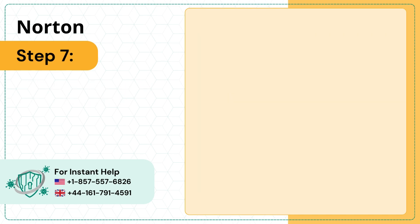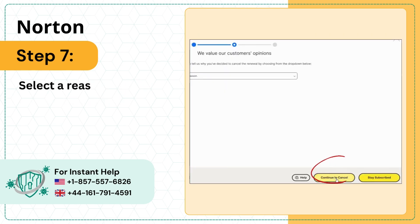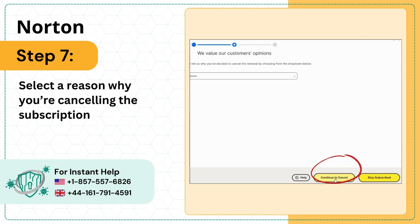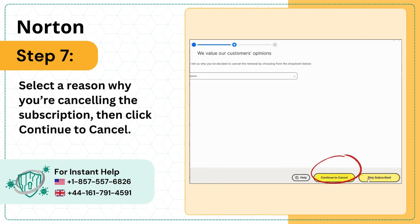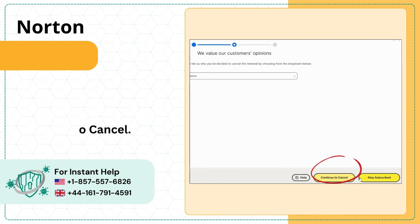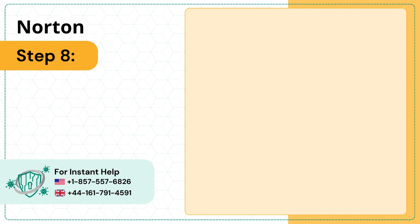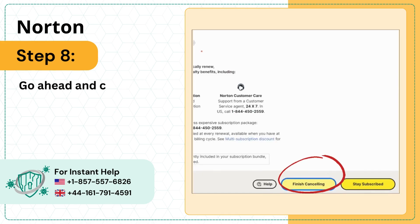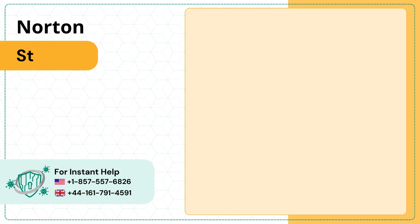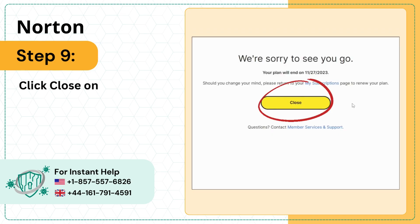Step 7: Select a reason why you're cancelling the subscription, then click Continue to Cancel. Step 8: Go ahead and click Finish Cancelling. Step 9: Click Close once done.